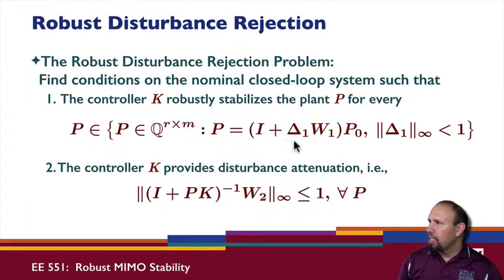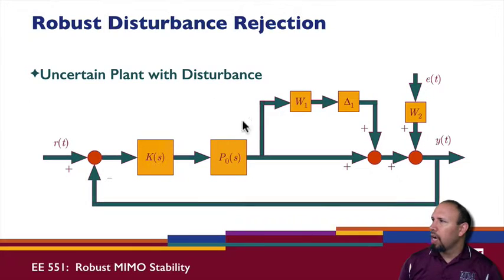So we have robust stability and we have disturbance attenuation. This is an example system in which we might consider disturbance rejection. Where does this kind of problem arise? This is our setup. Notice we have a multiplicative uncertainty in this case, and we have a disturbance that enters our system.